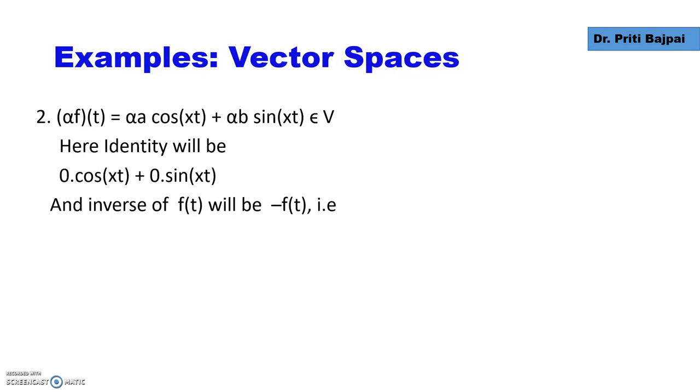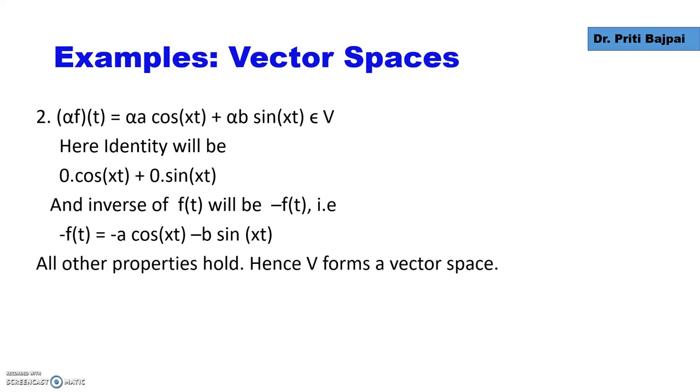Let's see what is the identity function. Here, the identity function will be a zero function: 0·cos(xt) + 0·sin(xt). And the inverse of f(t) will be -f(t). That is, -f(t) = -a cos(xt) - b sin(xt). We can check all other properties will also hold and we will form a vector space.